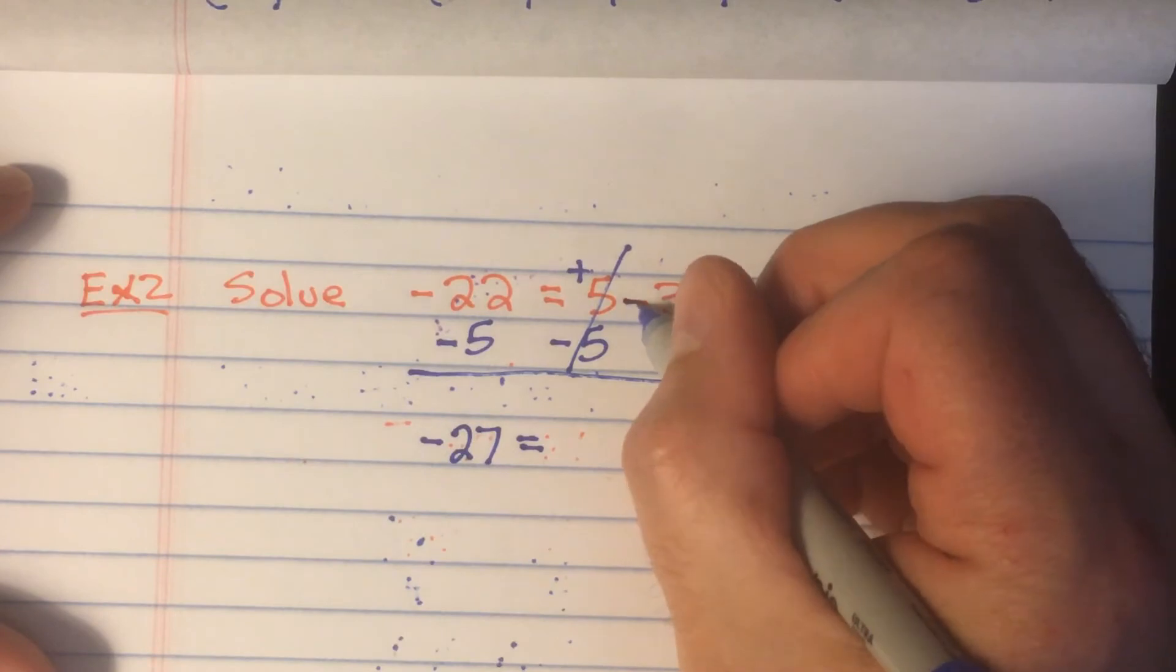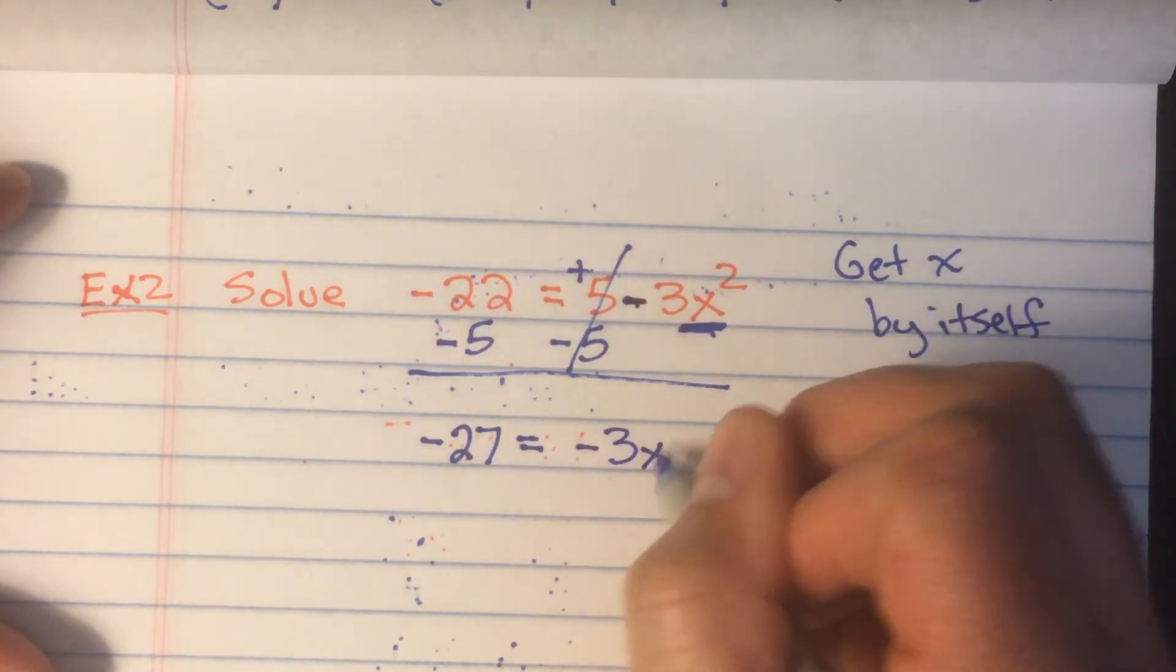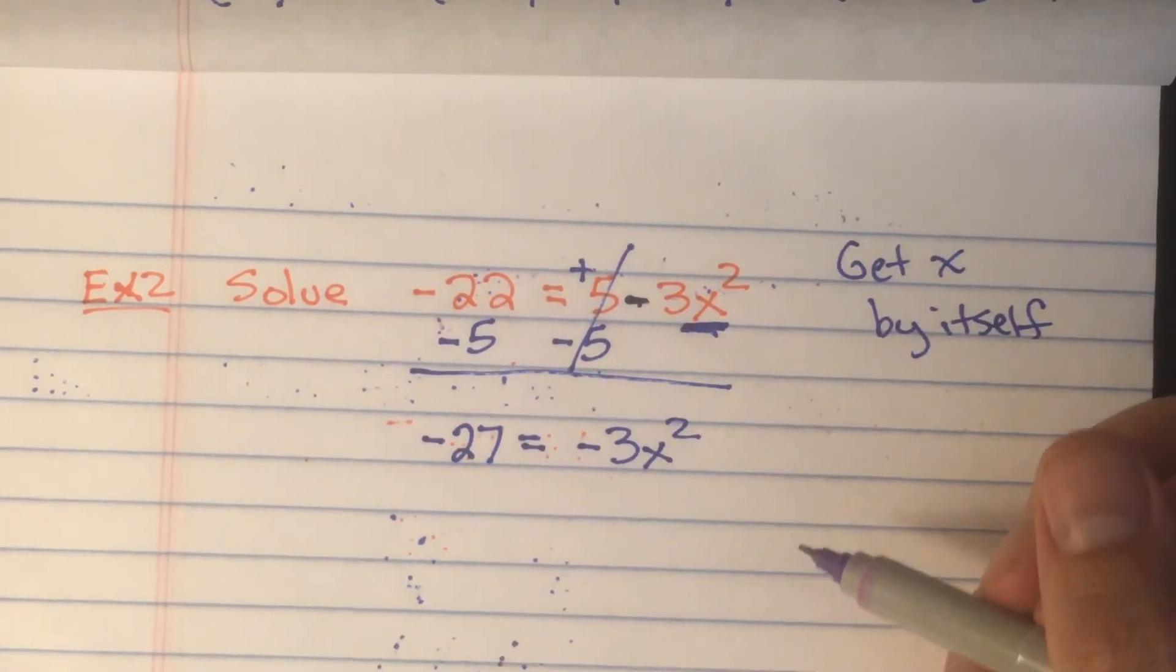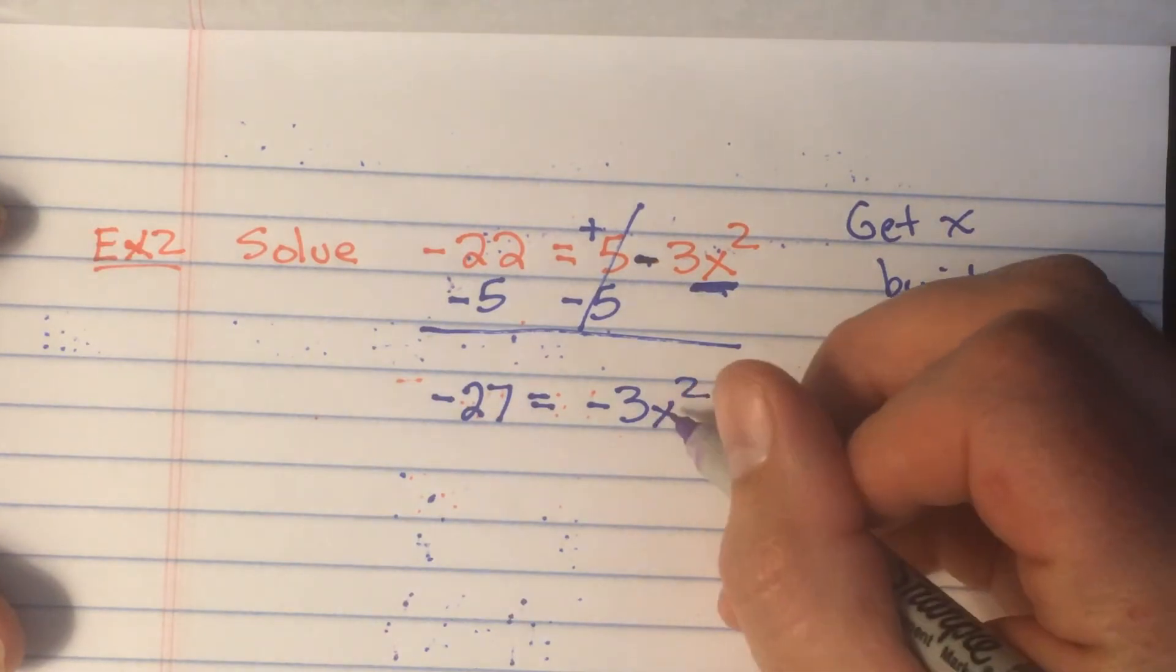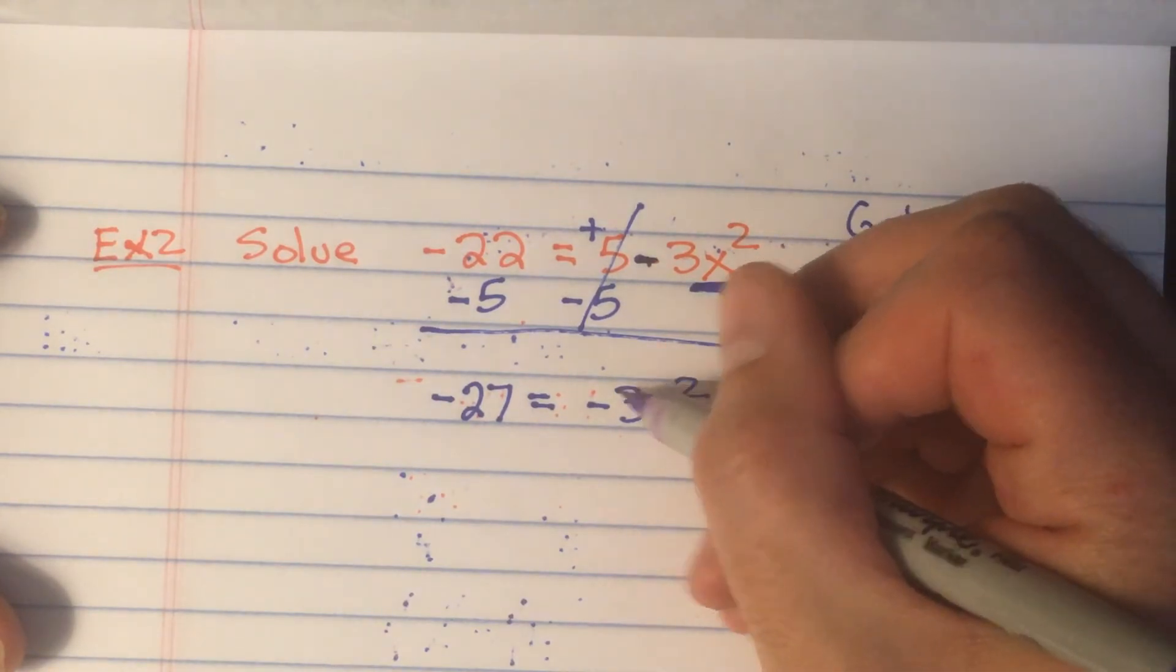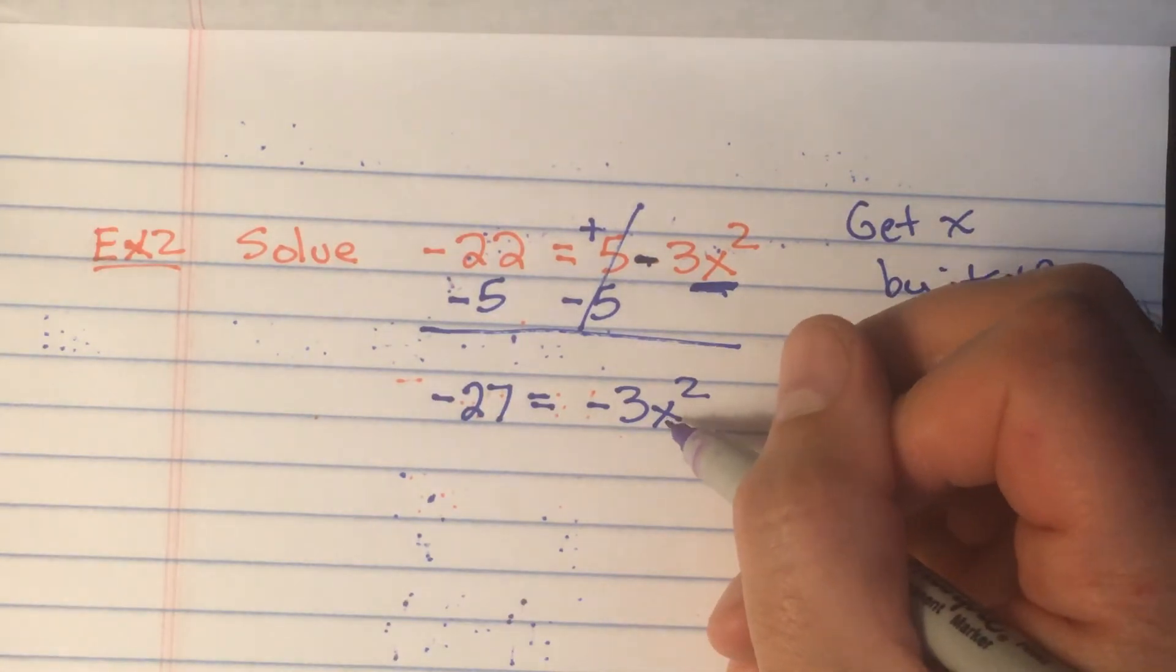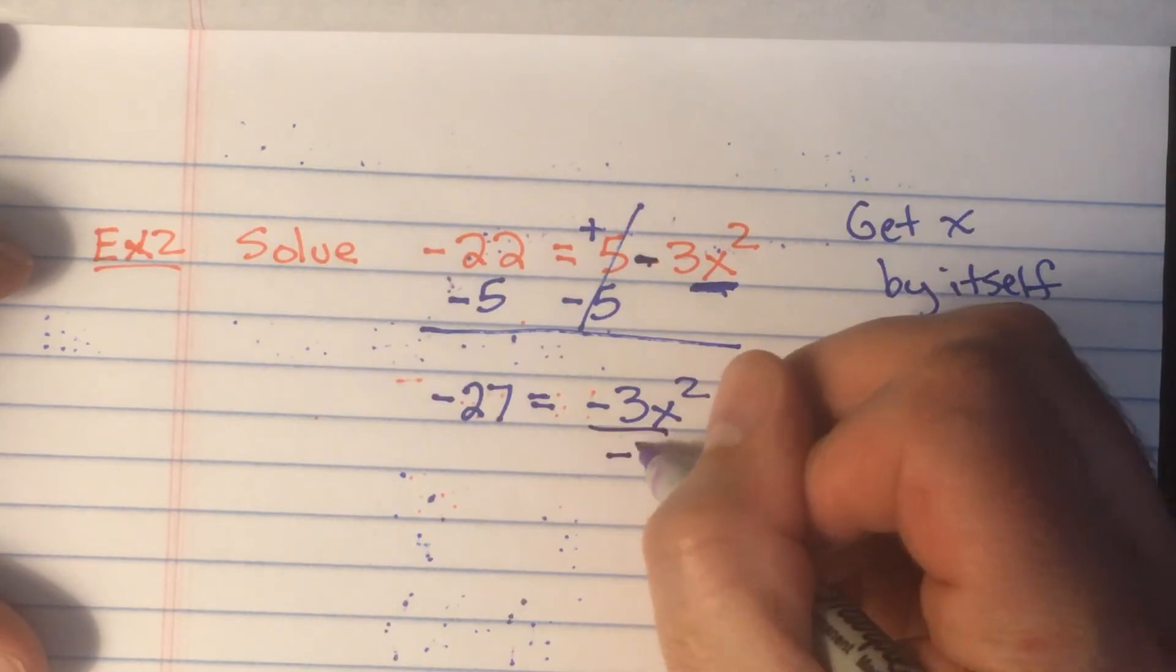And then don't forget, who does this minus sign belong to? It belongs to the 3. So bring it down when you're solving. Negative 3x squared. And then we're just going to keep going to get x by itself. So just every time you get a step done, just think, well, this is a brand new step. Let's just start over. Who's bothering the x now? Is it the times negative 3? Or is it the squared? Well, they're both bothering the x. Which one's farthest away? The negative 3 is least connected. So we're going to get rid of it by dividing.